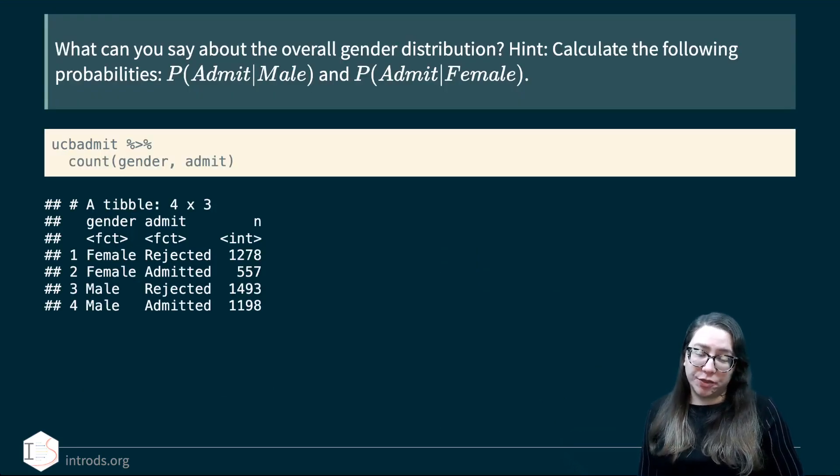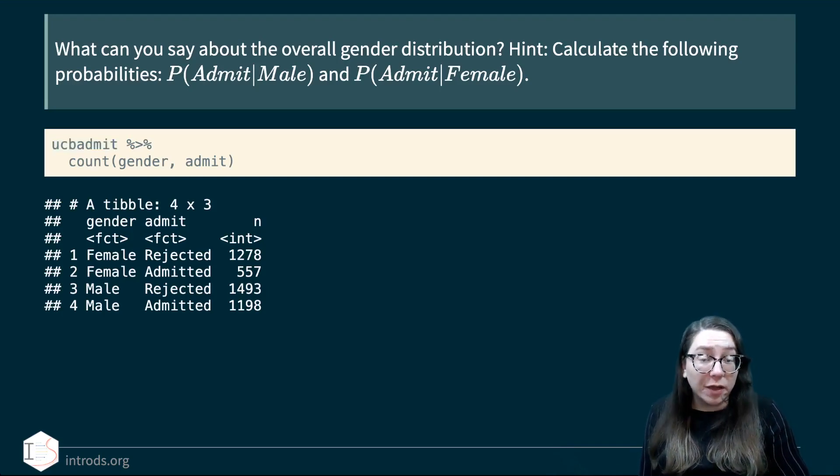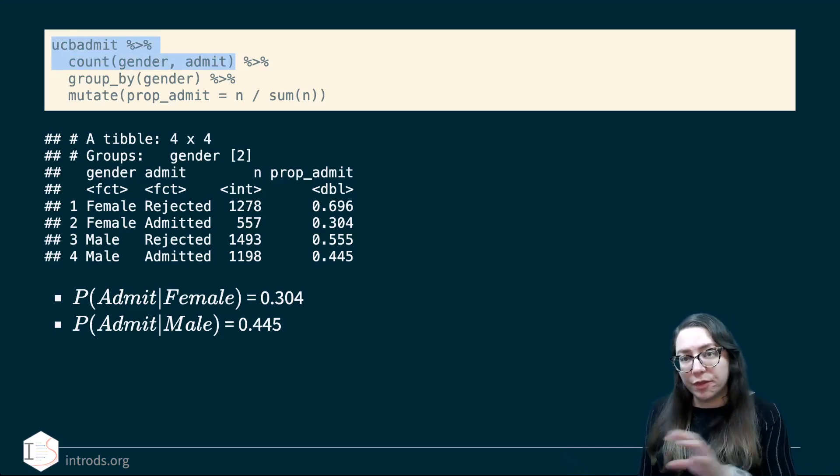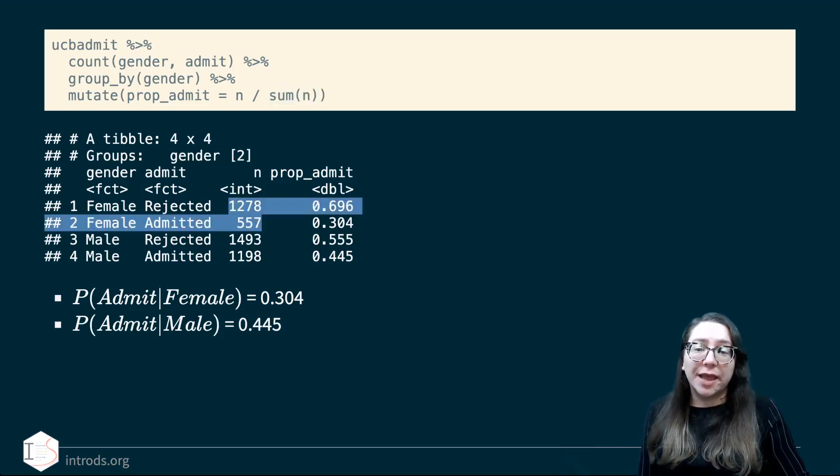What can we say about the overall gender distribution? We want to calculate the probabilities. What's the probability that somebody was admitted given they're male? And what's the probability that they were admitted given that they're female? Here we've taken our dataset and simply use the count function to get the frequencies that we need in order to be able to answer this question. And if we actually go ahead and calculate these proportions, the way I'm calculating it is after I get the counts, for the remainder of this, I want to group the two genders coded in this dataset separately. So we want to group by gender. And then for each gender, we want to calculate the proportion admitted. So that's the number of people who fall in that particular category, either rejected or admitted, divided by the sum of n. But remember that we're doing a group by statement here. So when we say sum of n, we mean the sum of the n's for females and sum of the n's for males separately.